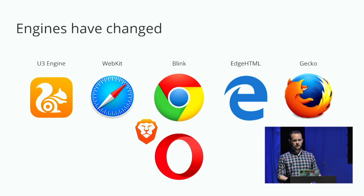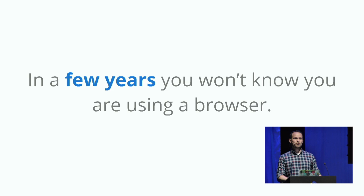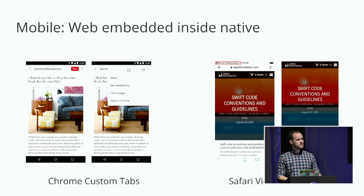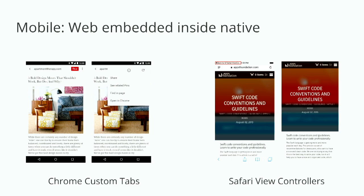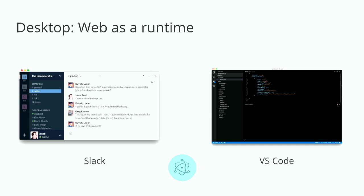Then there's the whole trend of the progressive web. My bet is that in a few years, end users and developers won't know they're using a browser anymore. What we're already seeing on mobile platforms is the web being embedded inside native — Chrome custom tabs on Android, where the Pinterest app can embed an advanced web view inside the native shell, and Safari view controllers on iOS. We're also seeing the web used as a runtime on desktop in apps like Slack and VS Code, which are just Electron apps — web shipped inside Electron.